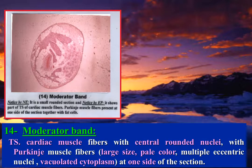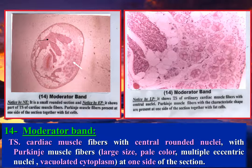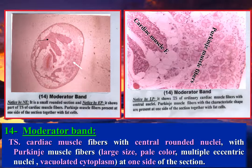By the naked eye, transverse section of the moderator band is a small rounded structure. By the eyepiece, it shows part of cardiac muscle fibers, darkly stained at one side, and Purkinje muscle fibers together with fat cells, lightly stained at the other side. By low power, the moderator band shows TS of cardiac muscle fibers with central rounded nuclei, darkly stained at one side, and Purkinje muscle fibers of large size with pale color and vacuolated cytoplasm, with the presence of fat cells at the other side.